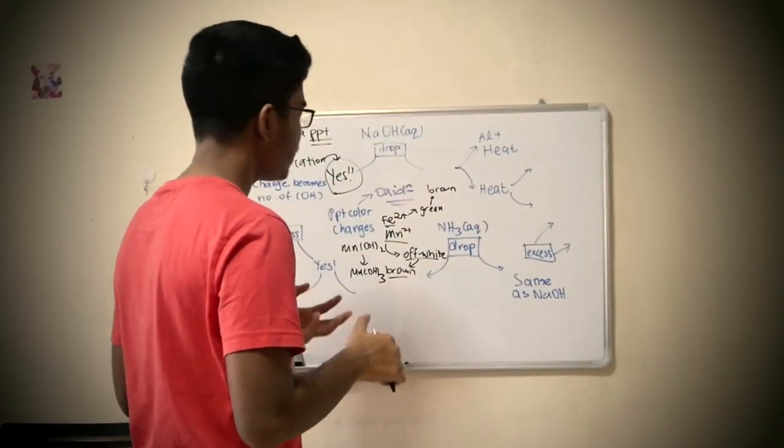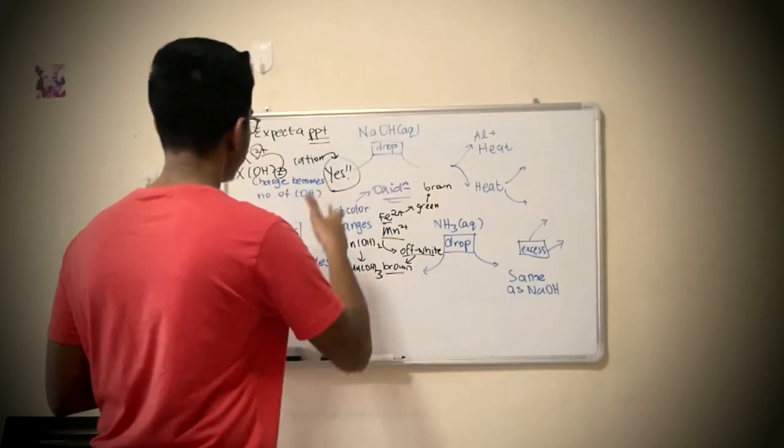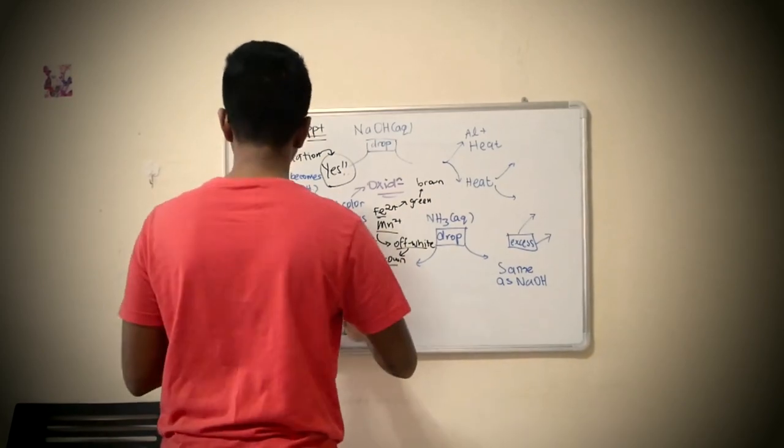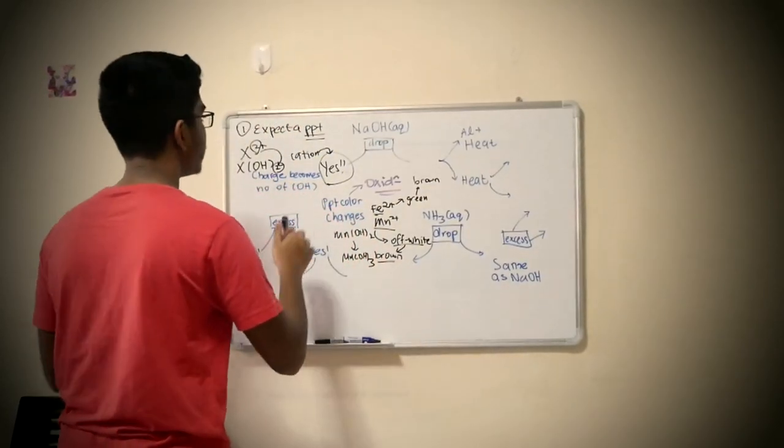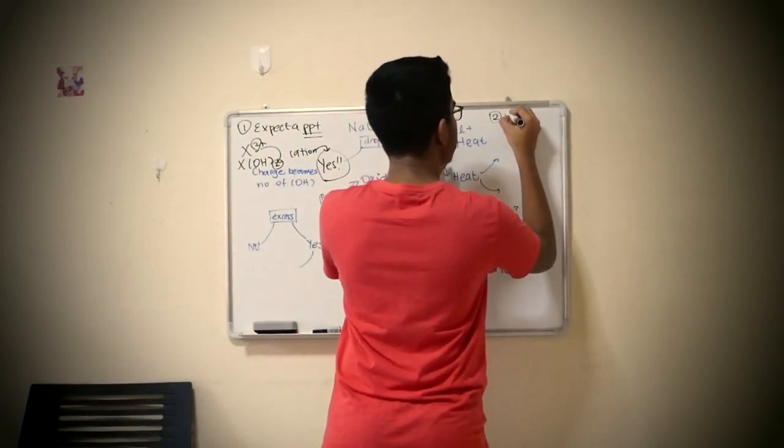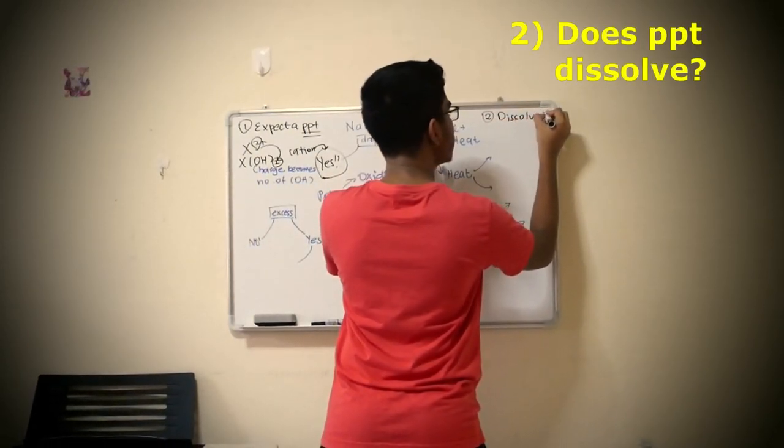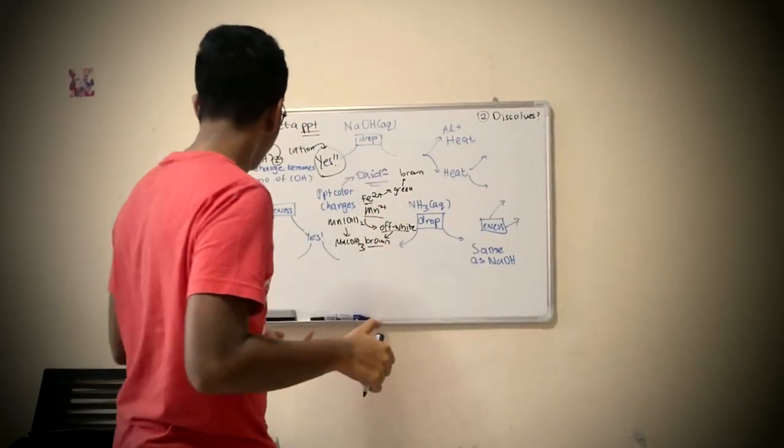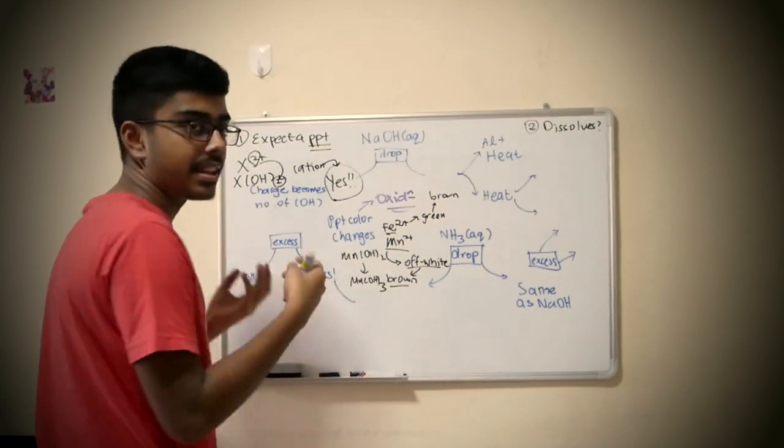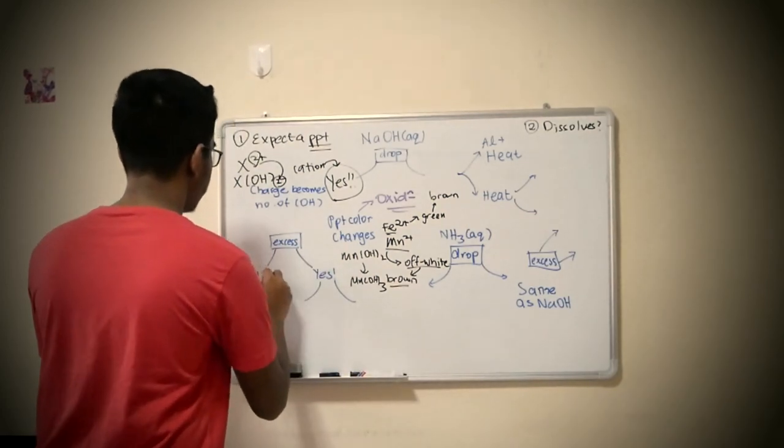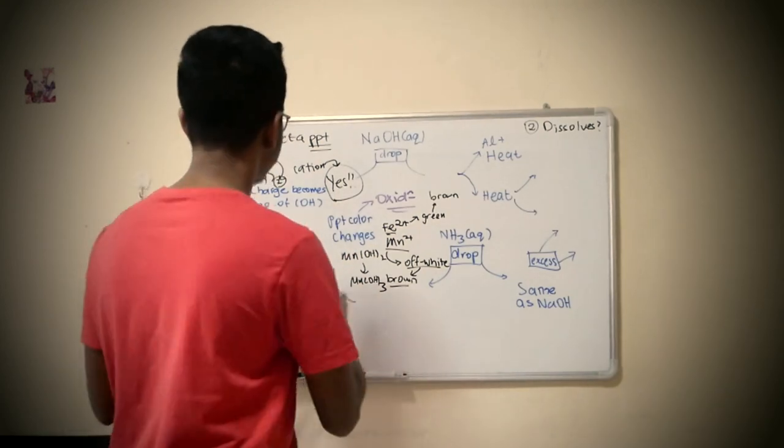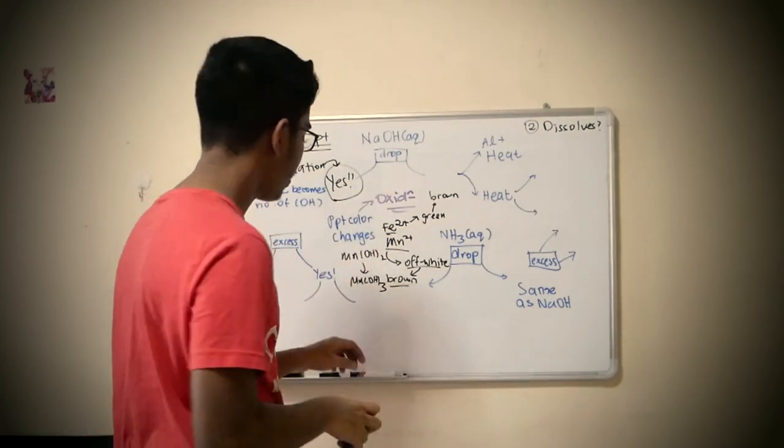Now so far we only talked about drop-wise. What if it is in excess? You're adding NaOH aqueous in excess. The thing you should ask yourself right now is, which precipitates dissolve? If it doesn't dissolve, it's very simple. It's just the precipitate. There's nothing to think about. It's the same as when it was in the drop-wise section.